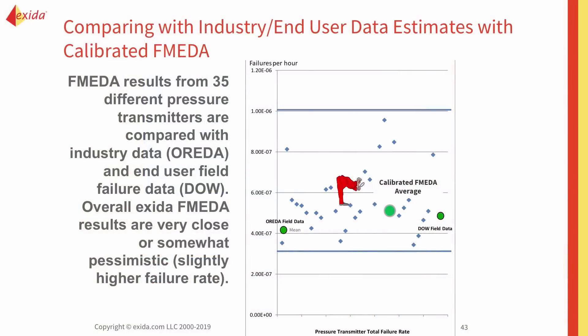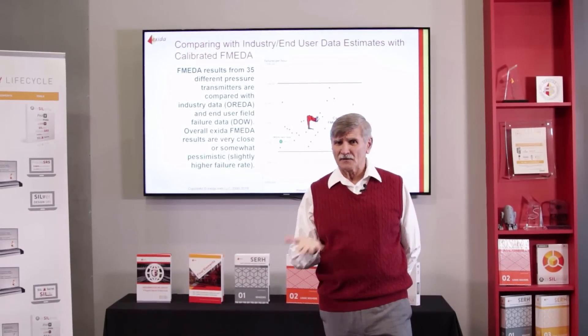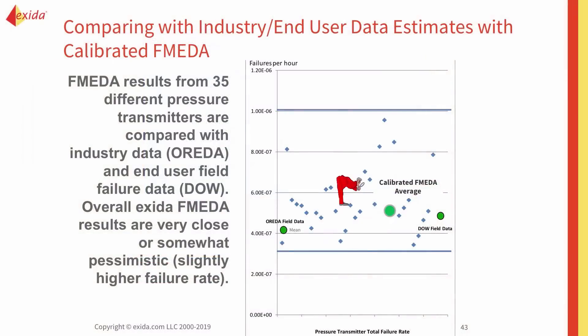Here's a comparison between FMEDAs of 35 different pressure transmitters — the little blue diagonals. The green dots are field failure data estimates from Dow Chemical, published, and from Morita. The average of the FMEDAs is a little bit higher than the real field failure data, which indicates to me that maybe the component database for FMEDA is a bit too conservative — higher failure rate. There's quite a scatter of the blue dots, which represents the difference in design strength between these different products. We can define upper and lower bounds by analyzing the difference in design strength, and we use that to generate some comparison charts.